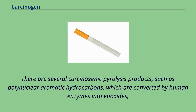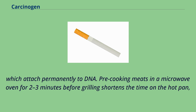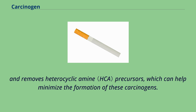There are several carcinogenic pyrolysis products, such as polynuclear aromatic hydrocarbons, which are converted by human enzymes into epoxides that attach permanently to DNA. Pre-cooking meats in a microwave oven for 2–3 minutes before grilling shortens the time on the hot pan and removes heterocyclic amine precursors, which can help minimize the formation of these carcinogens.